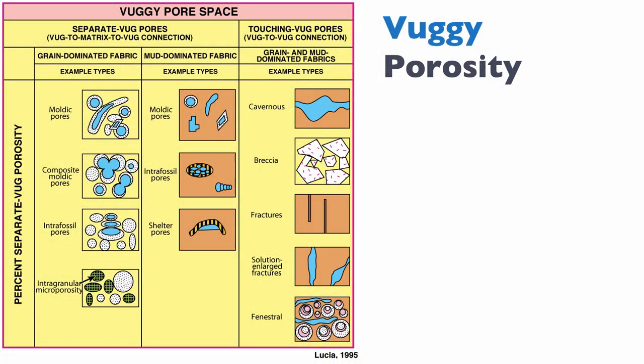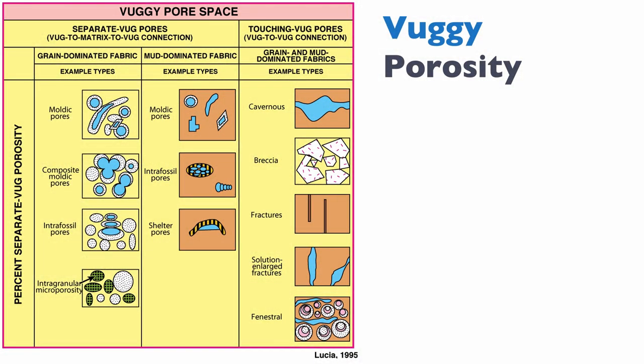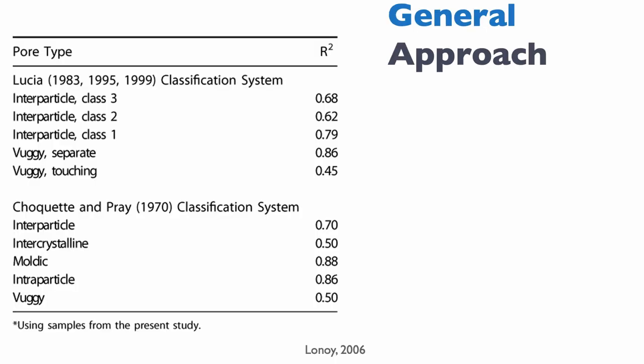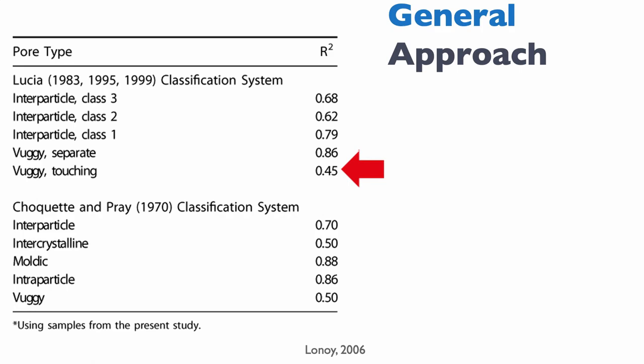This Lucia classification really revolutionized how we think about predicting permeability in carbonates, and the three petrophysical classes worked very well for his particular reservoirs. However, there is a problem: some predictivity is lost. We can predict interparticle porosity for Classes I, II, and III relatively well — at least above 50%. Separate vugs are also reasonably predictable because they are isolated and contribute almost no permeability. But for touching vugs, the R-squared is only 0.45, which is very low — so the ability to predict their permeability is quite poor.